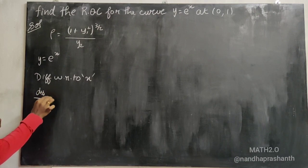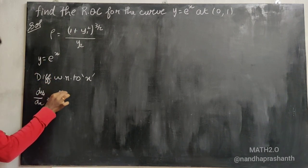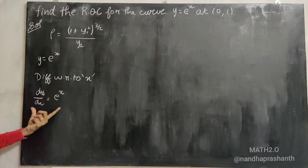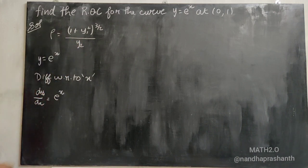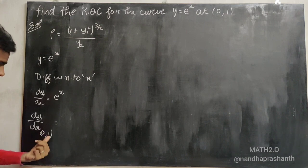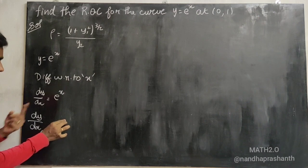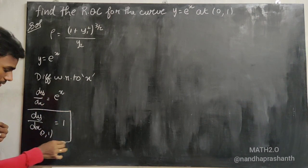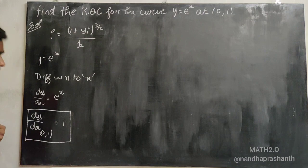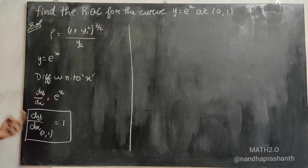Differentiating y = eˣ with respect to x, dy/dx is equal to eˣ. At the point (0, 1), x = 0, so dy/dx = e⁰ = 1. Therefore, the first derivative y₁ equals 1.